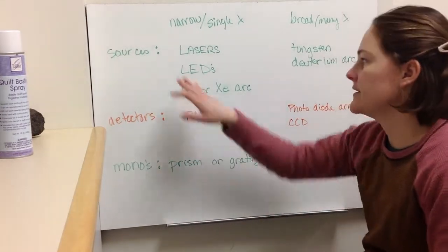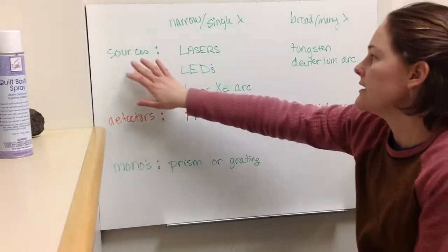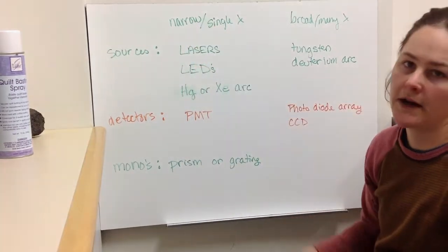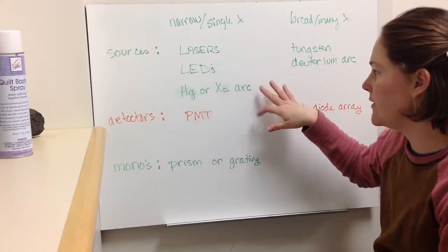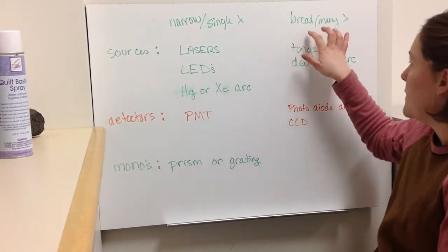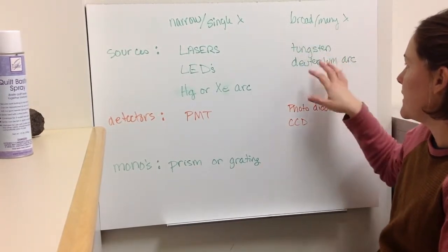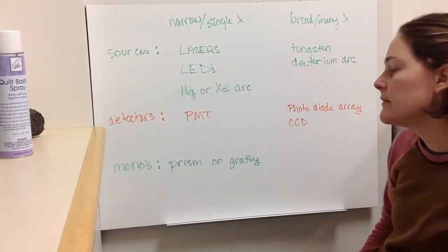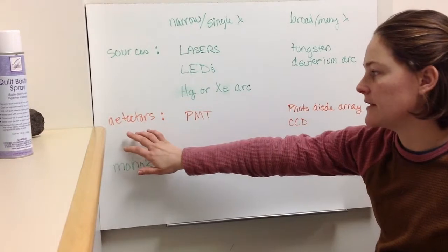All right, so let's just sort of review, let's talk about the sources. So if you want narrow or single wavelengths, you might use a laser LED or a mercury or xenon arc lamp. But if you want many, broad wavelengths, you would use a combination of the tungsten and deuterium arc lamp.